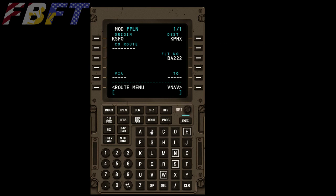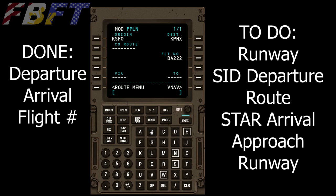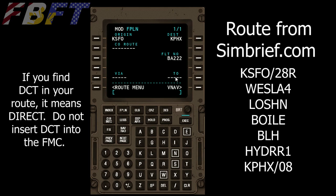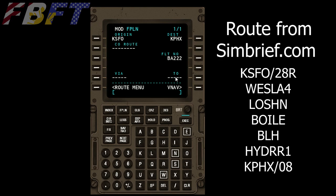Now that we have departure and arrival airports, we need to get in the runways, departure and arrival procedures, and the full route. Coming off of SimBrief, I have a full route: KSFO, runway 28R, to WESLA4 (the standard instrument departure procedure). Next in the actual route is LOSHN, then BOYLE, then VOR BLH. Then we're on to the STAR — the arrival for Phoenix — which is HIDR1, arriving at KPHX anticipating runway 08.